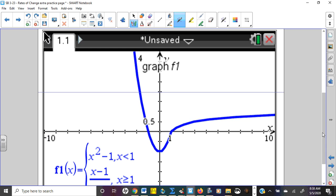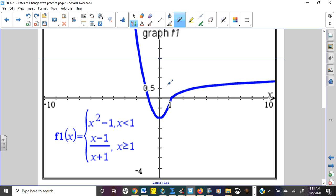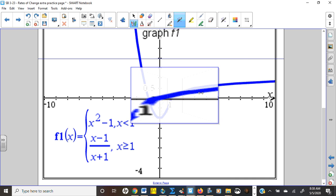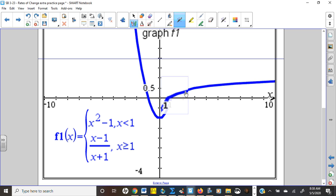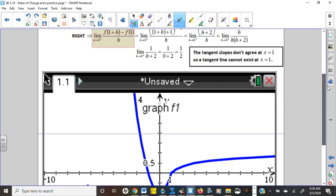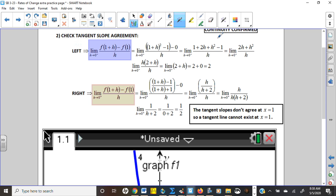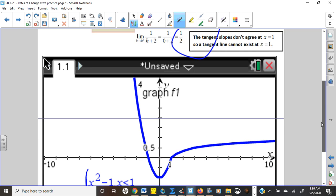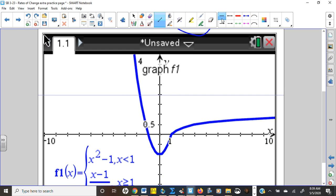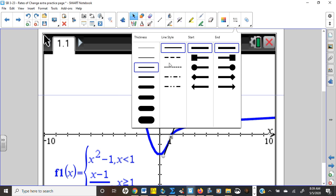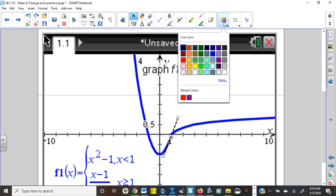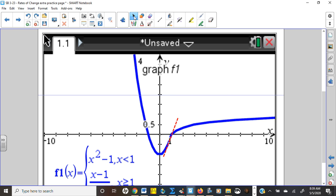And it doesn't look too bad. I mean, it looks smoother than the other ones did because the slopes are closer, but it's not close enough. It's still enough of a corner there, and you can see coming in from the left, my slope was 2, my tangent slope was 2. On the right, it was 1 half. So we have a comparatively steep slope of 2 here where the parabola gives way to the rational function.